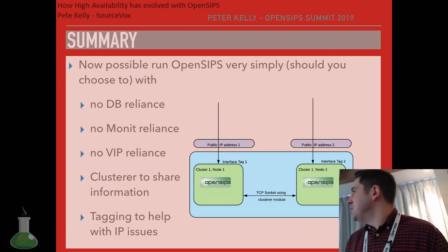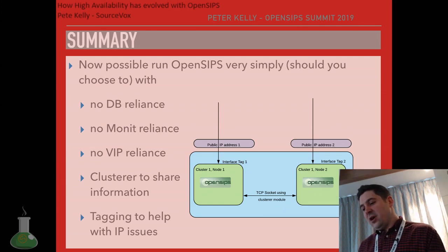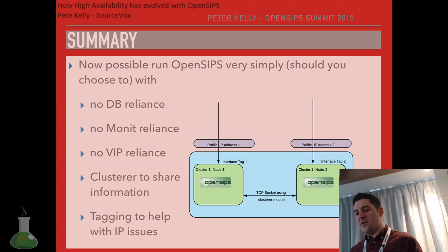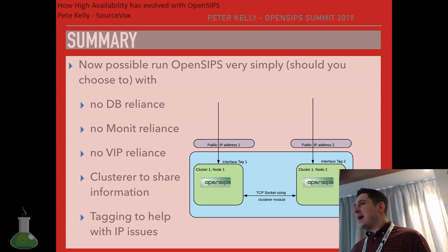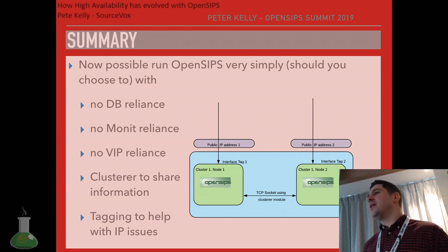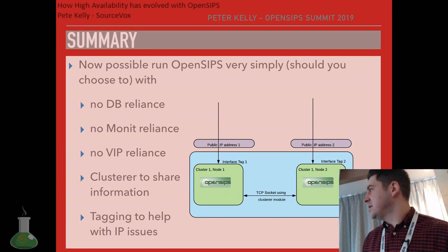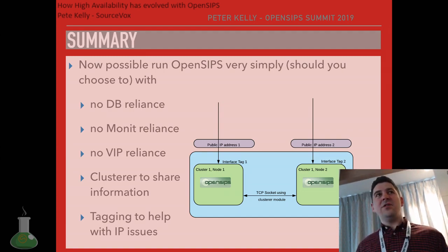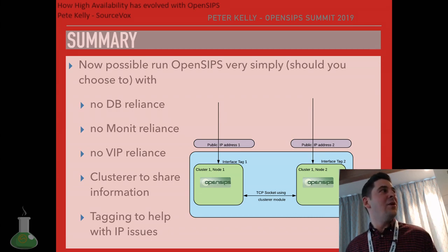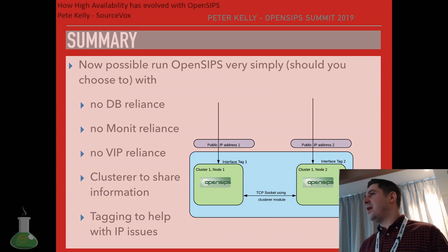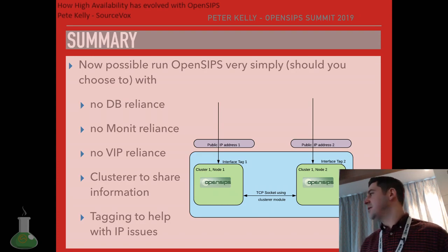With all these enhancements and improvements, you can simply create as many OpenSIPs nodes as you need, cluster them with the cluster module, and they will talk to each other automatically. We don't really care what the local IP addresses are anymore because we can use interface tagging, shared between the cluster automatically. It's now a much, much less manual process to do high availability with OpenSIPs — it's very much getting more DevOps focused. Whereas ten years ago it was very much a manual process to maintain more than one OpenSIPs and keep them in sync.